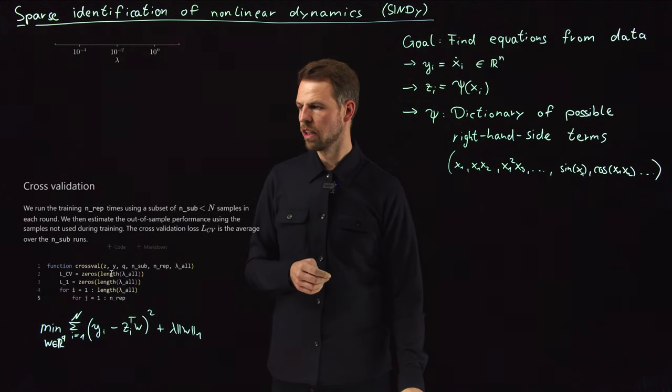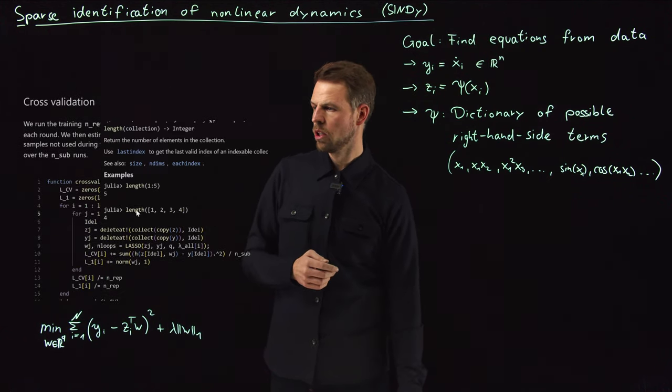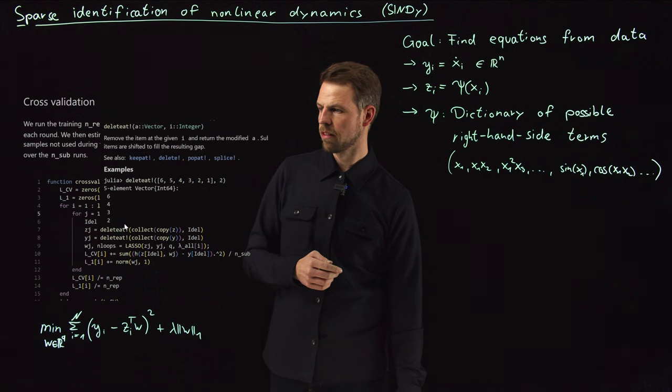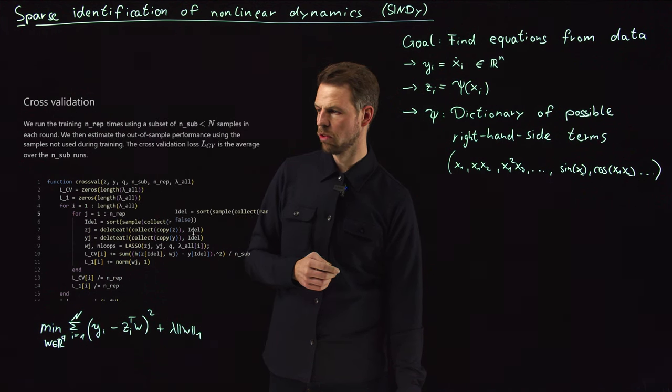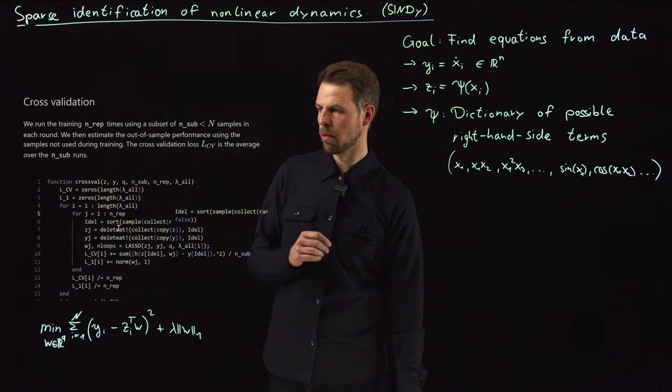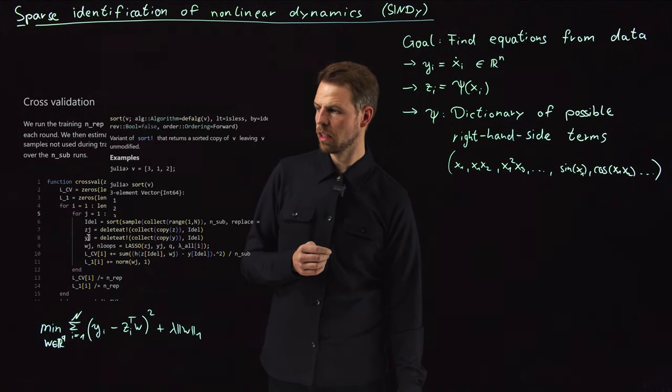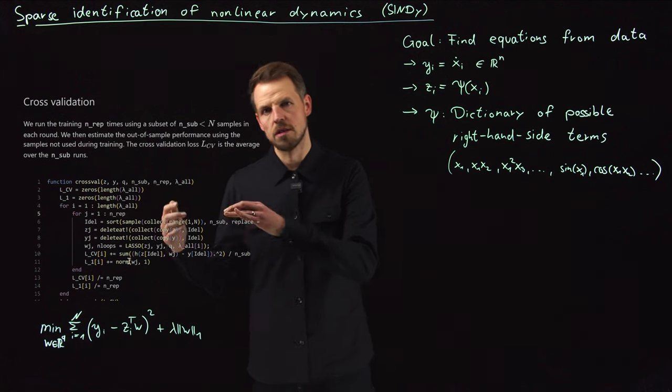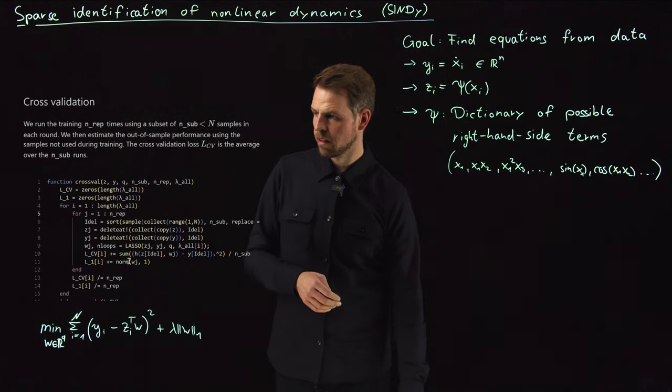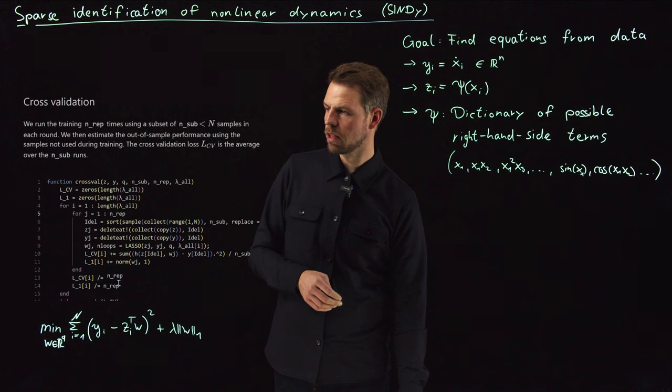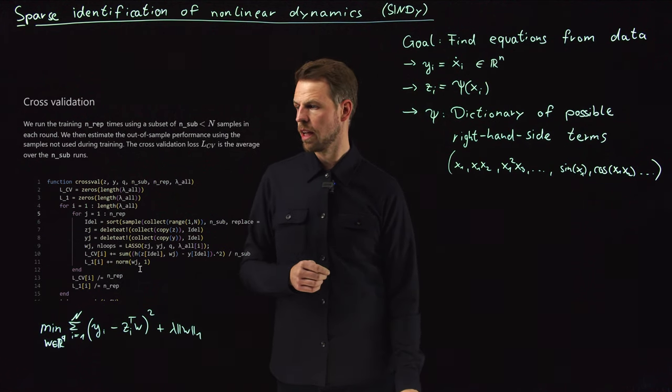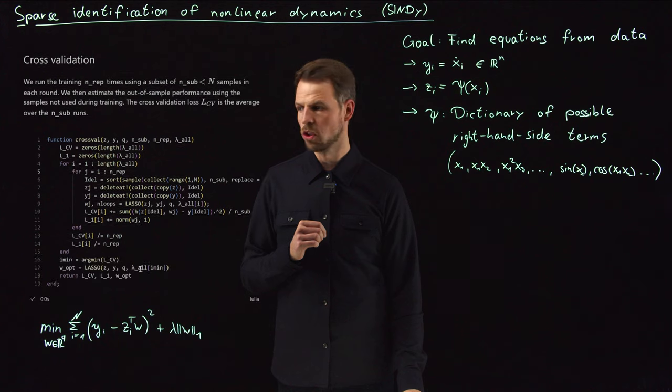We can use this for cross-validation. All you need to do is delete a subset of your data. You sample this ideal, so which samples to delete. You train on the samples you have not deleted, and you validate on the part you have set aside. And then you can repeat this n rep times, and then take the mean as your validation loss.